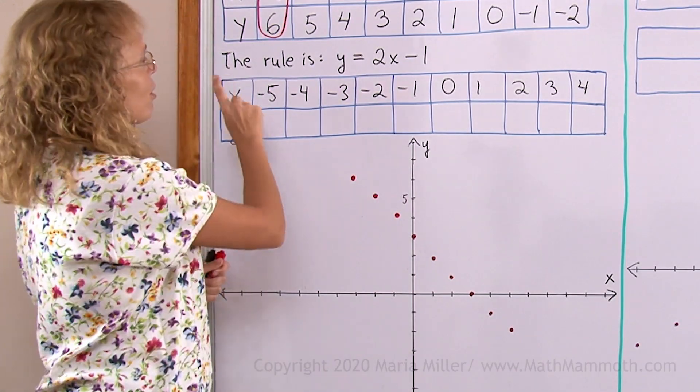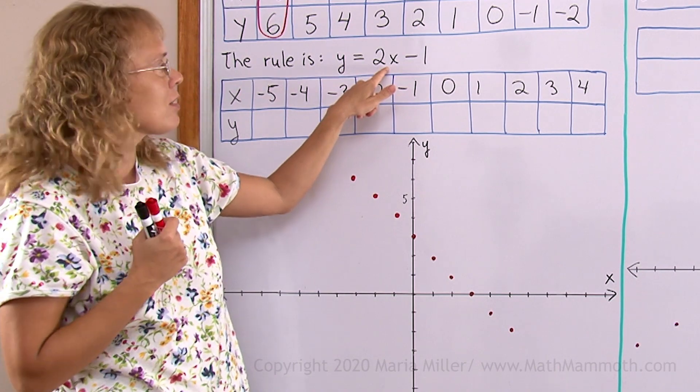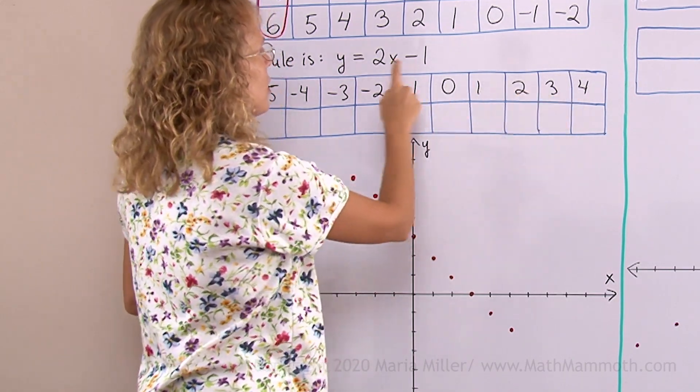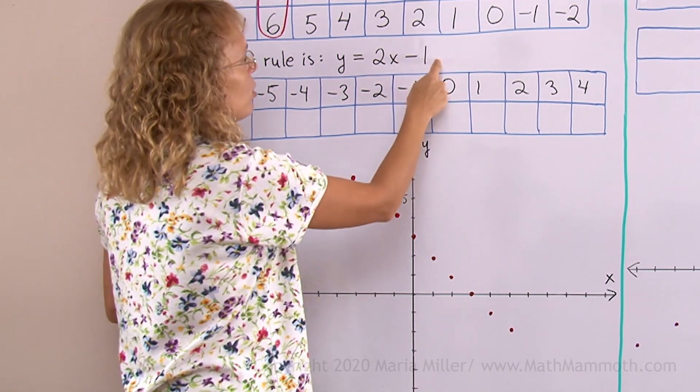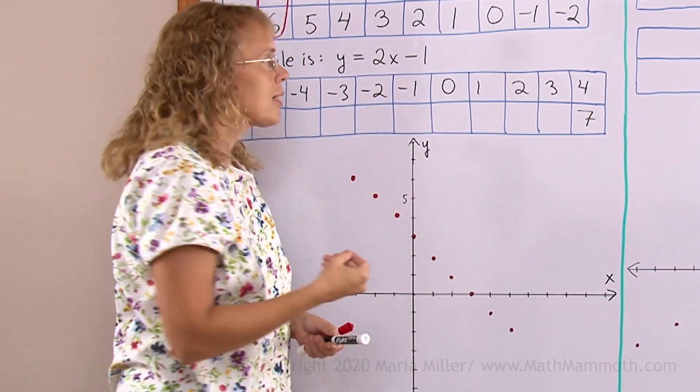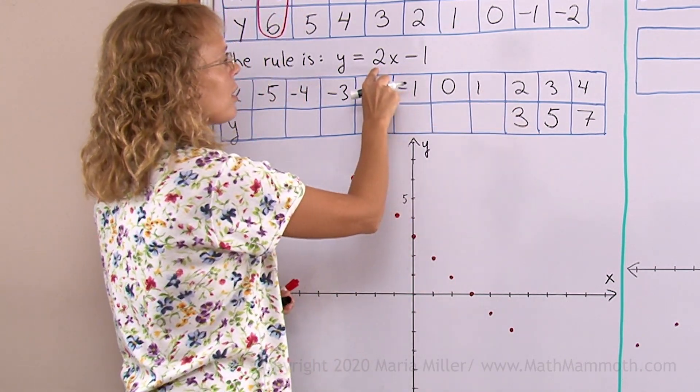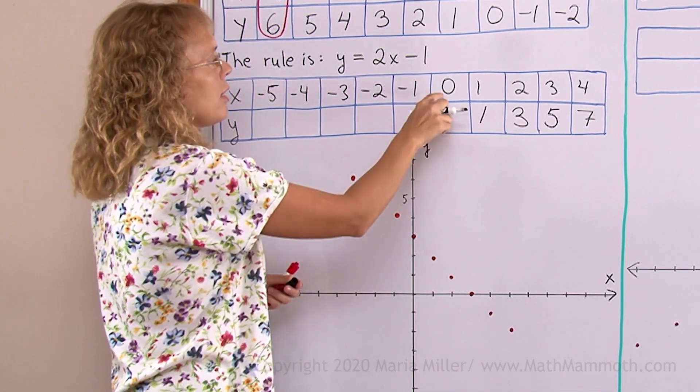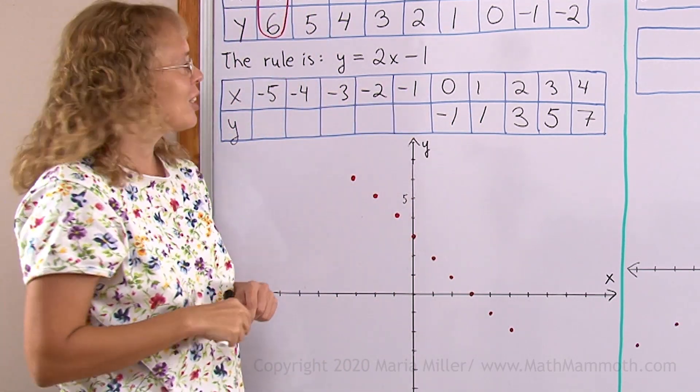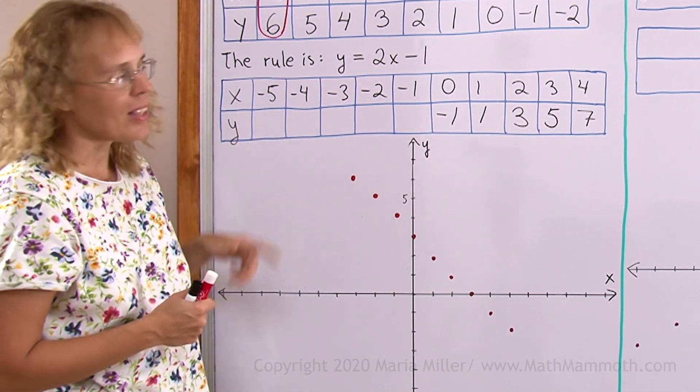Now let's try another one. The rule is y equals 2x minus 1. Note, 2x means 2 times x. The multiplication sign is not written in algebra between a number and a letter. So let's start out, for example, with when x is 4. So we get 2 times 4, that's 8. Minus 1, that's 7. Then over here x is 3, 2 times 3 is 6, minus 1 is 5. Then 2, 2 times 2 is 4, minus 1 is 3. Then x is 1, we get 2 times 1, that's 2, minus 1 is 1. Then if x is 0, we get 0 minus 1, that's negative 1. Then we get negative numbers.